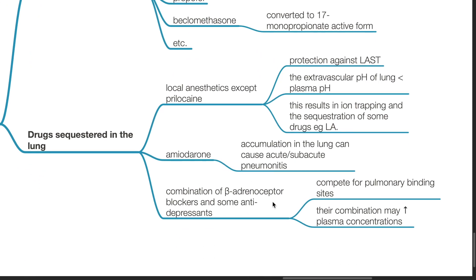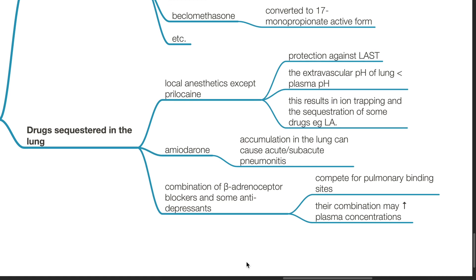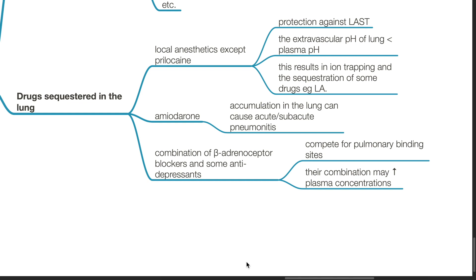Drugs sequestered in the lung include local anesthetics except for prilocaine, providing protection against local anesthetic toxicity. The extravascular pH of the lung is lower than the plasma pH, resulting in ion trapping and sequestration of some drugs including local anesthetics. Accumulation of amiodarone in the lung can cause acute or subacute pneumonitis. There is competition for pulmonary binding sites with simultaneous administration of beta blockers and some antidepressants, resulting in increased plasma concentrations of both drugs.